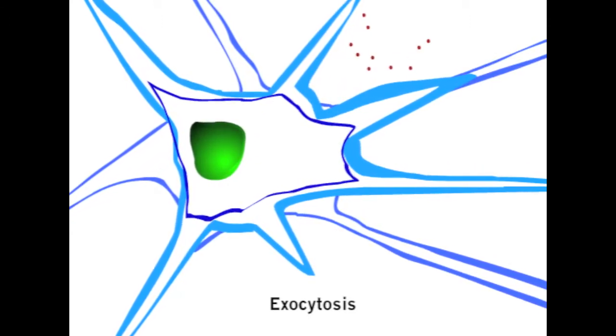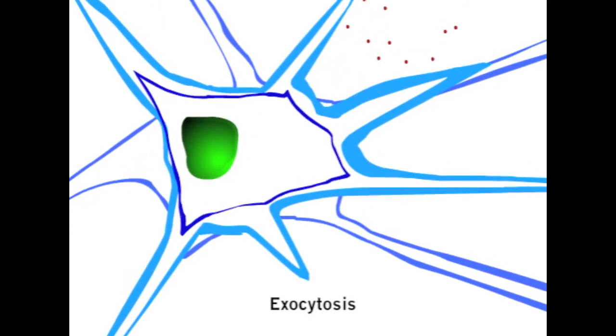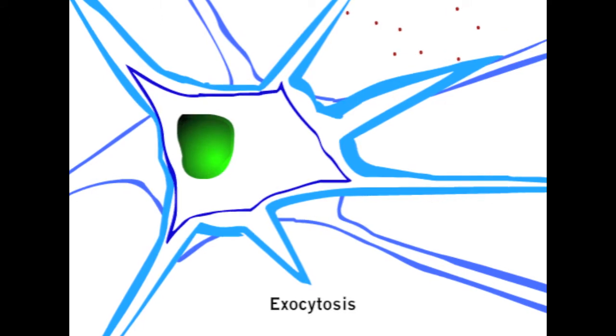When it has connected, the cell membrane splits to form a hole so the molecules can escape. At no time is the cell open, because the vesicle acts as an extension of the membrane and eventually becomes part of it. This is a neuron cell excreting waste. But some cells also use exocytosis to transfer information between them, like neuron cells.